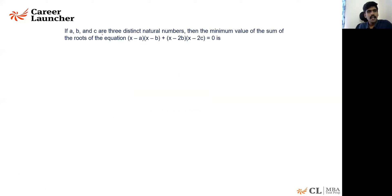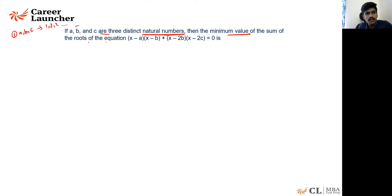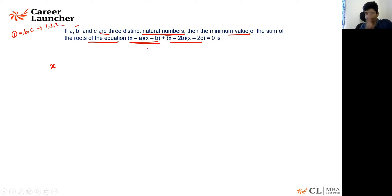Now for Question 52: a, b, and c are three distinct natural numbers. We need to find the minimum value of the sum of the roots of the equation (x − a)(x − b) + (x − 2b)(x − 2c) = 0. Expanding the first part (x − a)(x − b) gives x² − (a + b)x + ab.